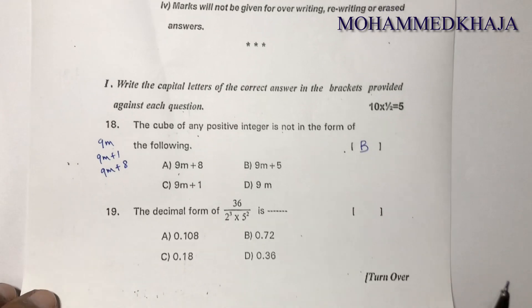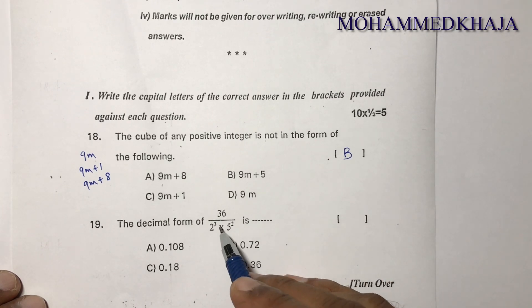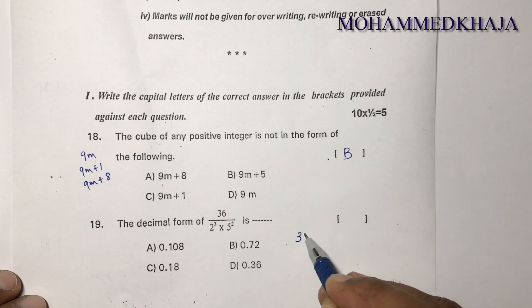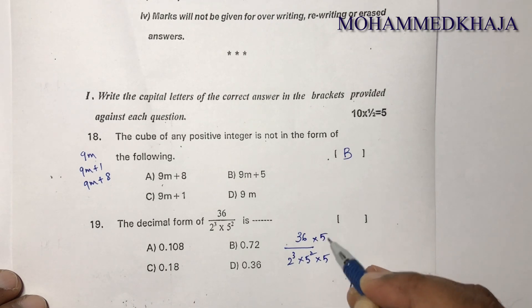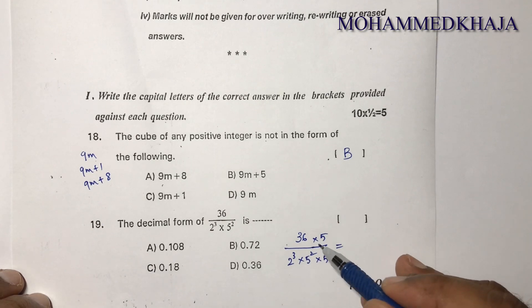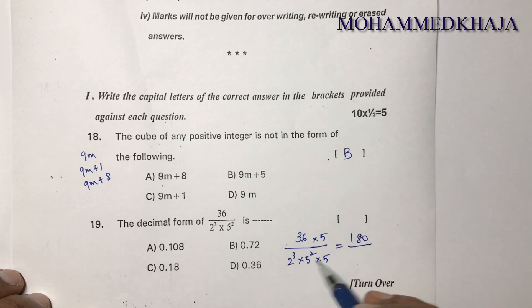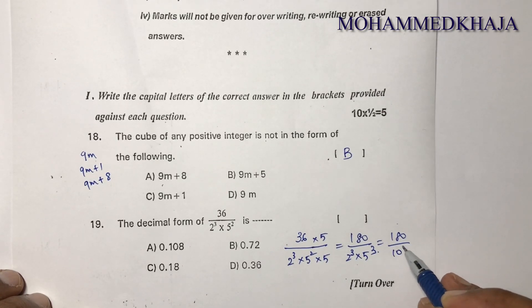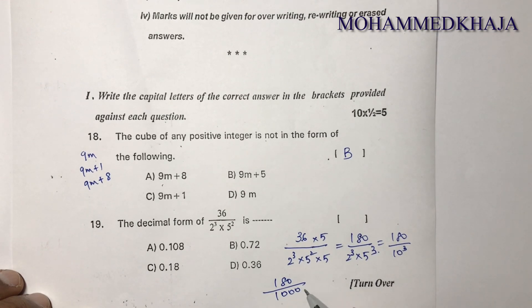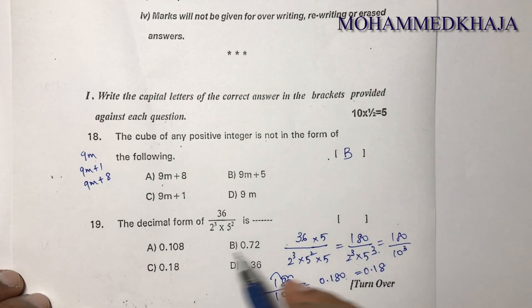Question 2: Express 36/(2³×5²) as a decimal. Since 2³=8 and 5²=25, we multiply numerator and denominator by 5 to get 180/(2³×5³) = 180/1000 = 0.180, which simplifies to 0.18. The correct option is C.